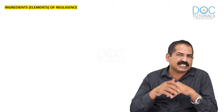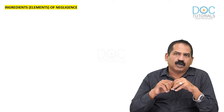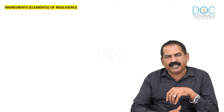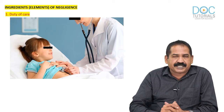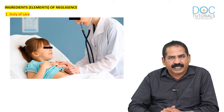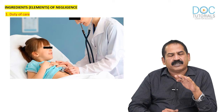What are the ingredients of negligence? In other words, if a patient sues in a court of law, what are the elements to be fulfilled? Number one: duty of care. That means there should be establishment of a patient-doctor relationship — the doctor should have treated the patient.